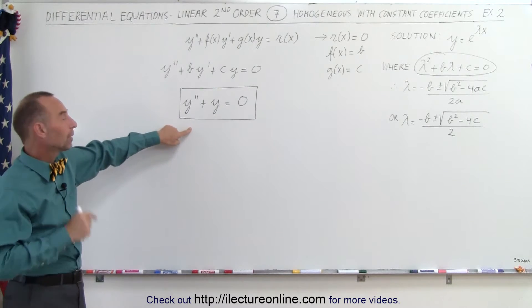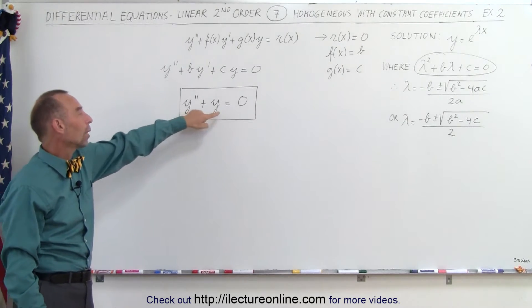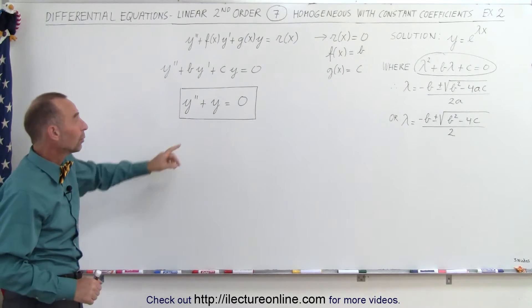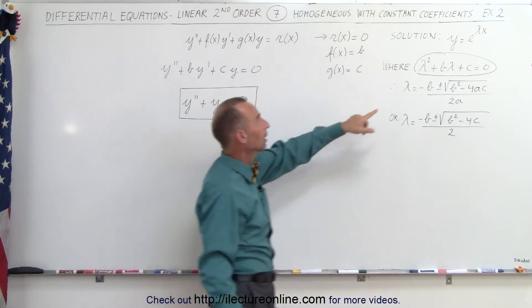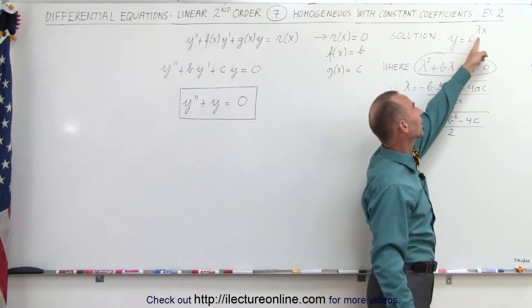We're now going to solve this particular one: y double prime plus y equals zero. How do we do that? Well, we realize that the general solution is going to be in the form y equals e to the lambda x,